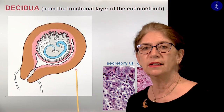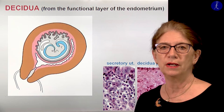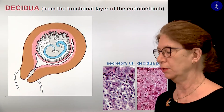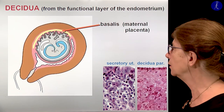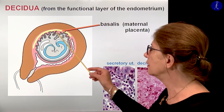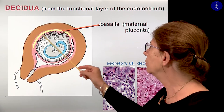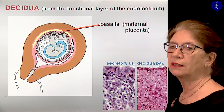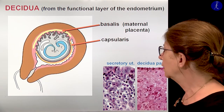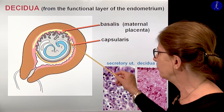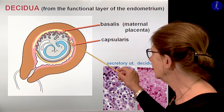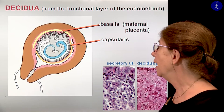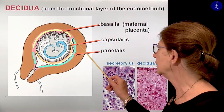The uterus doesn't know where the implantation will happen, so this decidual reaction will start everywhere around the uterus. That part of the decidua which is right underneath the embedded embryo, we call it the basal decidua. This will form the maternal part of the placenta. The region which is covering the back of this embedded blastocyst will be the capsular decidua — that's a very thin layer. And the rest of the decidua will form the parietal decidua.